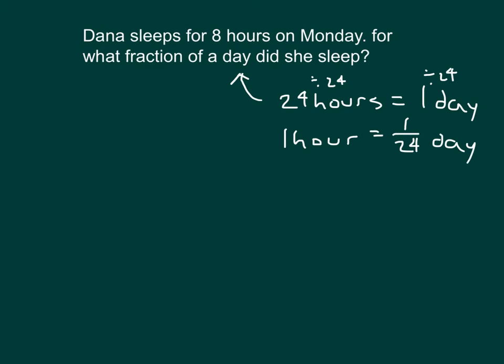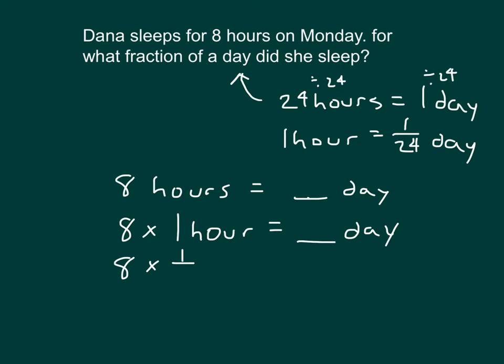Using this relationship, I can figure out how much 8 hours is worth of a day. 8 hours that's 8 times 1 hour is equal to a certain amount of days. And so that's 8 times, I have my relationship right here. So that's 1 twenty-fourth of an hour which will equal 8 over 24 which I can go ahead and simplify to 1 third of a day. So if Dana sleeps for 8 hours on Monday, she slept for one-third of the day. So that 8 hours equals one-third of a day.